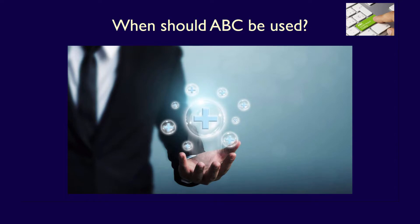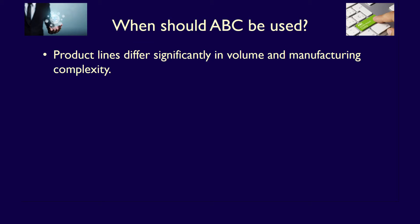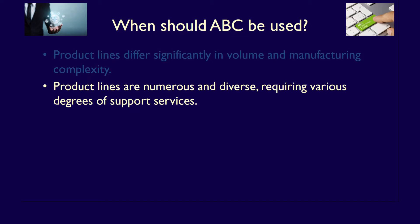Given the limitations of an activity-based costing system, when should companies consider implementing an ABC system? If a company's products are produced in significantly different volumes and the manufacturing process of these products is complex, then likely an ABC system would provide better cost allocations. When there are many different product lines, and each product line is unique, requiring different support services, then an ABC system will provide better cost allocations to each product.